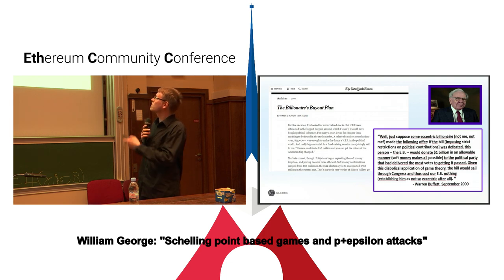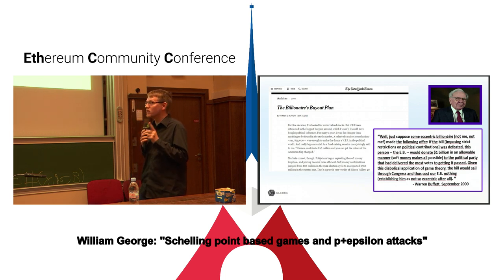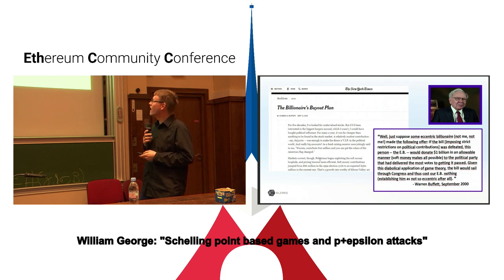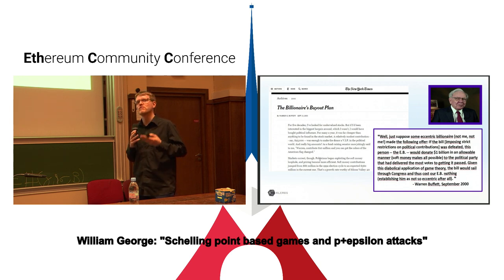He says, suppose that some eccentric billionaire — not me — made the following offer: if the bill he was proposing, imposing strict restrictions on campaign finance, was defeated, this eccentric billionaire would donate a billion dollars in an allowable manner to the political party that had delivered the most votes to getting the bill passed. Given this diabolical application of game theory, the bill would sail through Congress and cost our eccentric billionaire nothing.